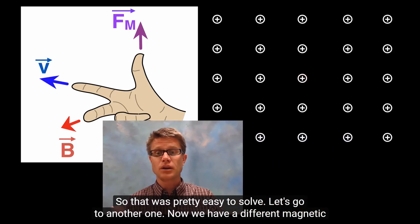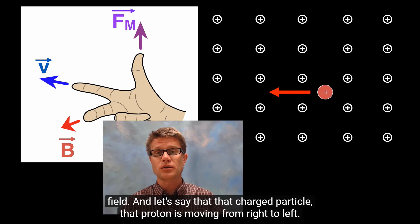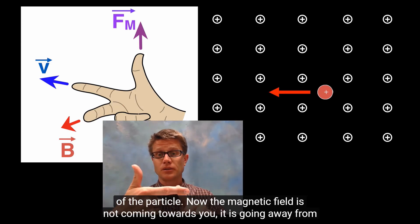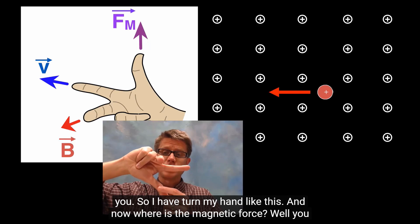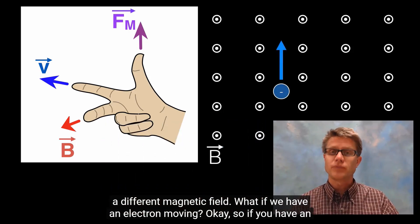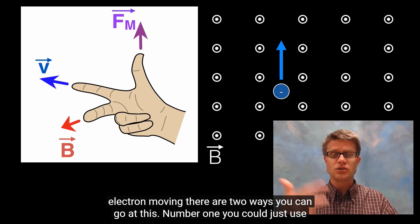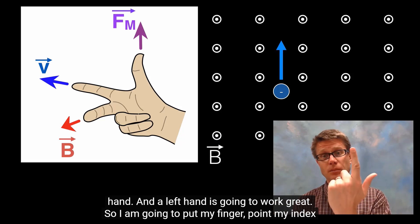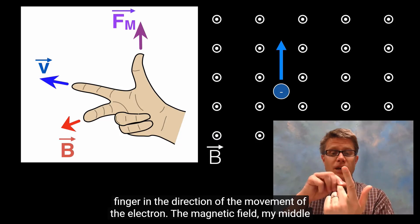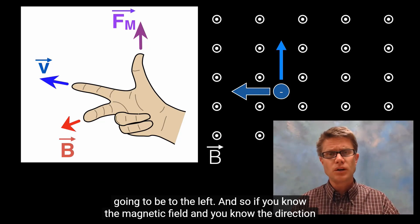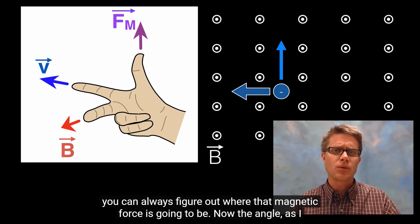For a proton moving from right to left with the magnetic field going away from you, stick your index finger toward the left, turn your hand so your middle finger points away, and you'll find the magnetic force acting downward. If you have an electron moving, there are two approaches: use your right hand and reverse the force at the end, or use your left hand directly. Point your index finger in the direction of the electron's movement, your middle finger for the magnetic field coming at you, and your thumb shows the force — in this case, to the left.